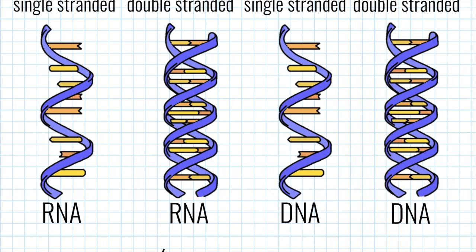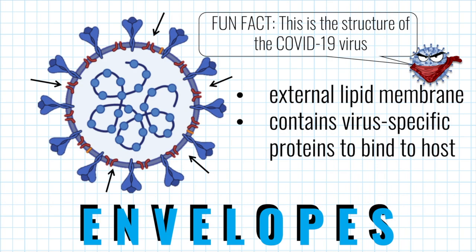Some viruses also have an external lipid membrane known as the envelope, which surrounds the entire capsid. Viruses with these envelopes don't encode for them. Instead, they borrow a patch from the host membrane when they exit cells following infection. However, the envelopes do have proteins which are specified by the virus, which often help them bind to host cells.